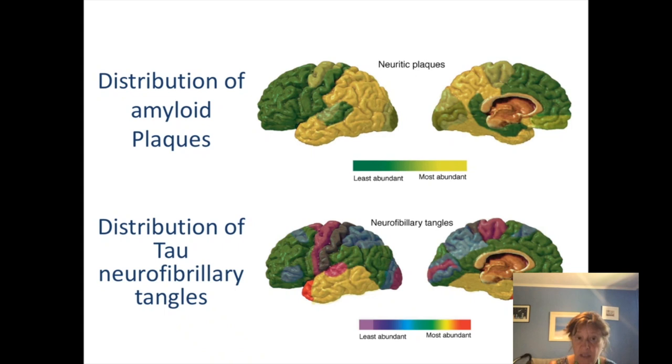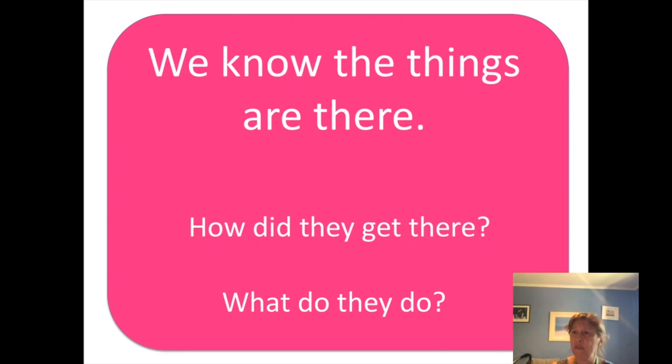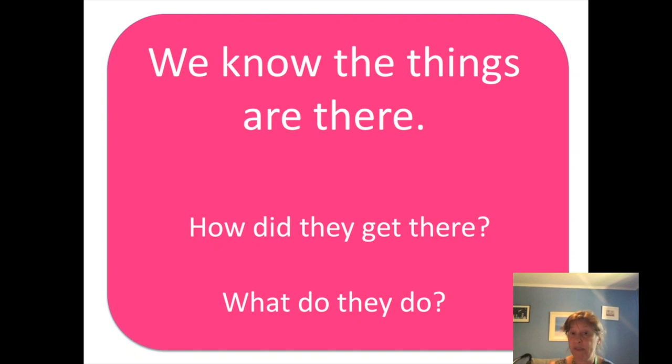In order to understand Alzheimer's disease, we have to think about what evidence we already have. We know these proteins are deposited in the brain and we think they're playing an important role. The sorts of questions we want to ask are: how did they get there in the first place? How do people without Alzheimer's disease prevent them from getting there? And how do they cause neurodegeneration — degeneration of the brain tissue that leads to Alzheimer's disease?